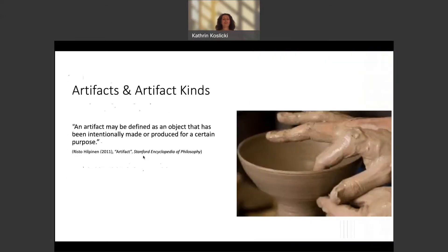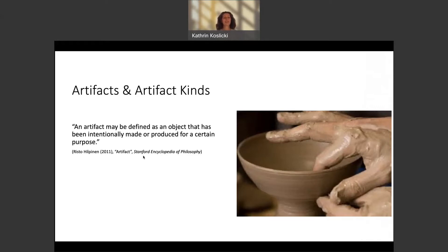In his 2011 entry on artifacts in the Stanford Encyclopedia of Philosophy, Risto Hilpinen gave the following definition: an artifact may be defined as an object that has been intentionally made or produced for a certain purpose. We have three important components here: the idea of being intentionally versus non-intentionally produced; the idea that there is a process of making or production; and the idea that this process aims towards a certain purpose or goal.